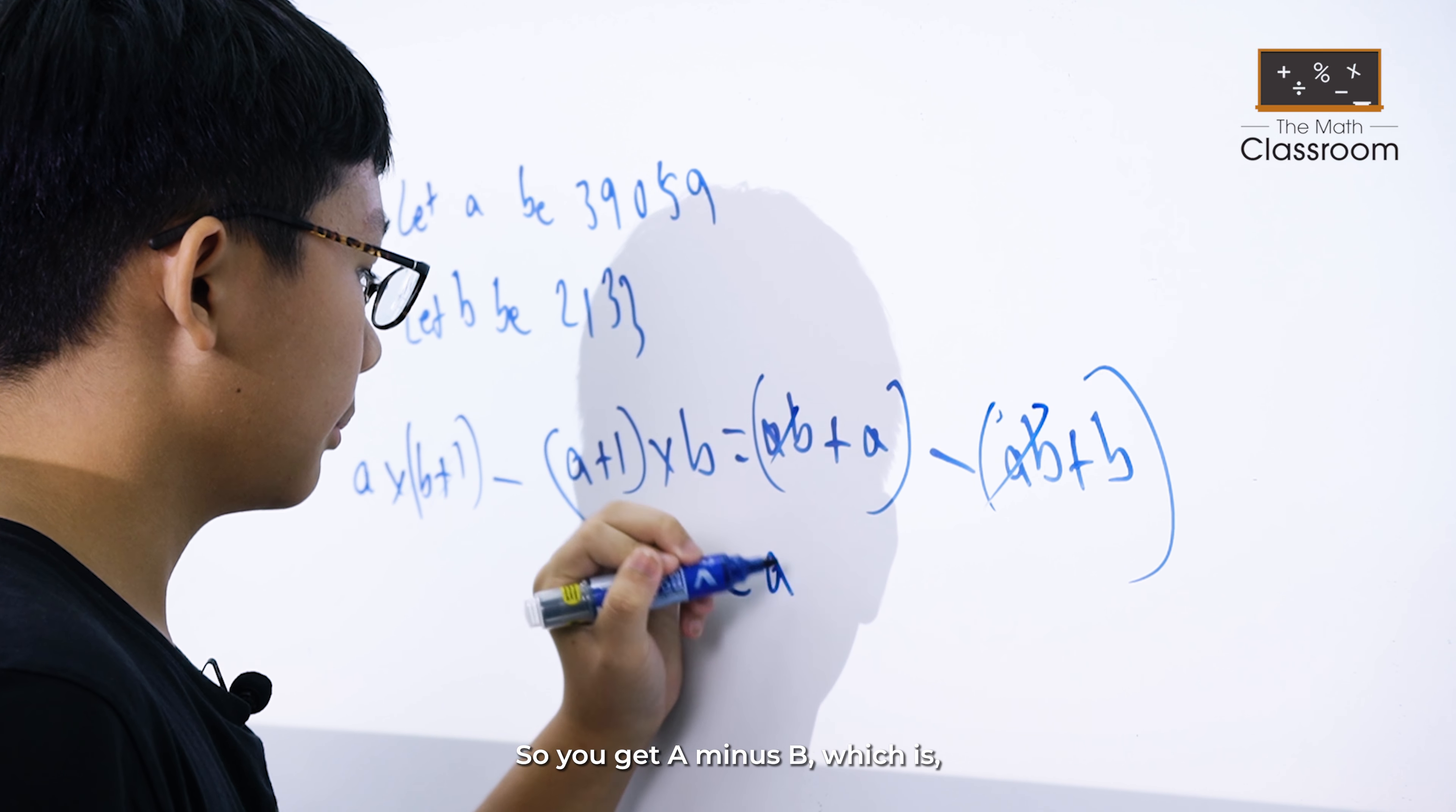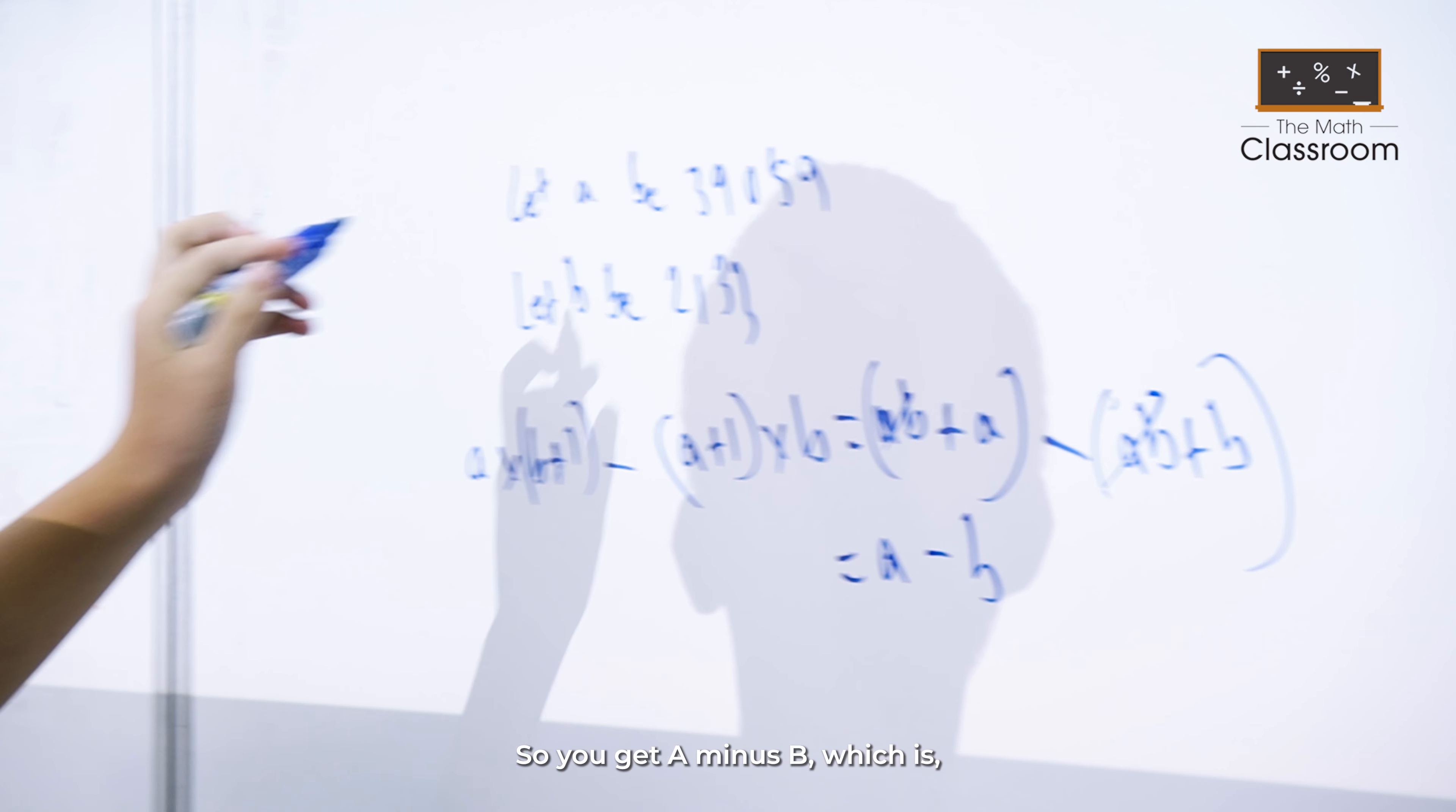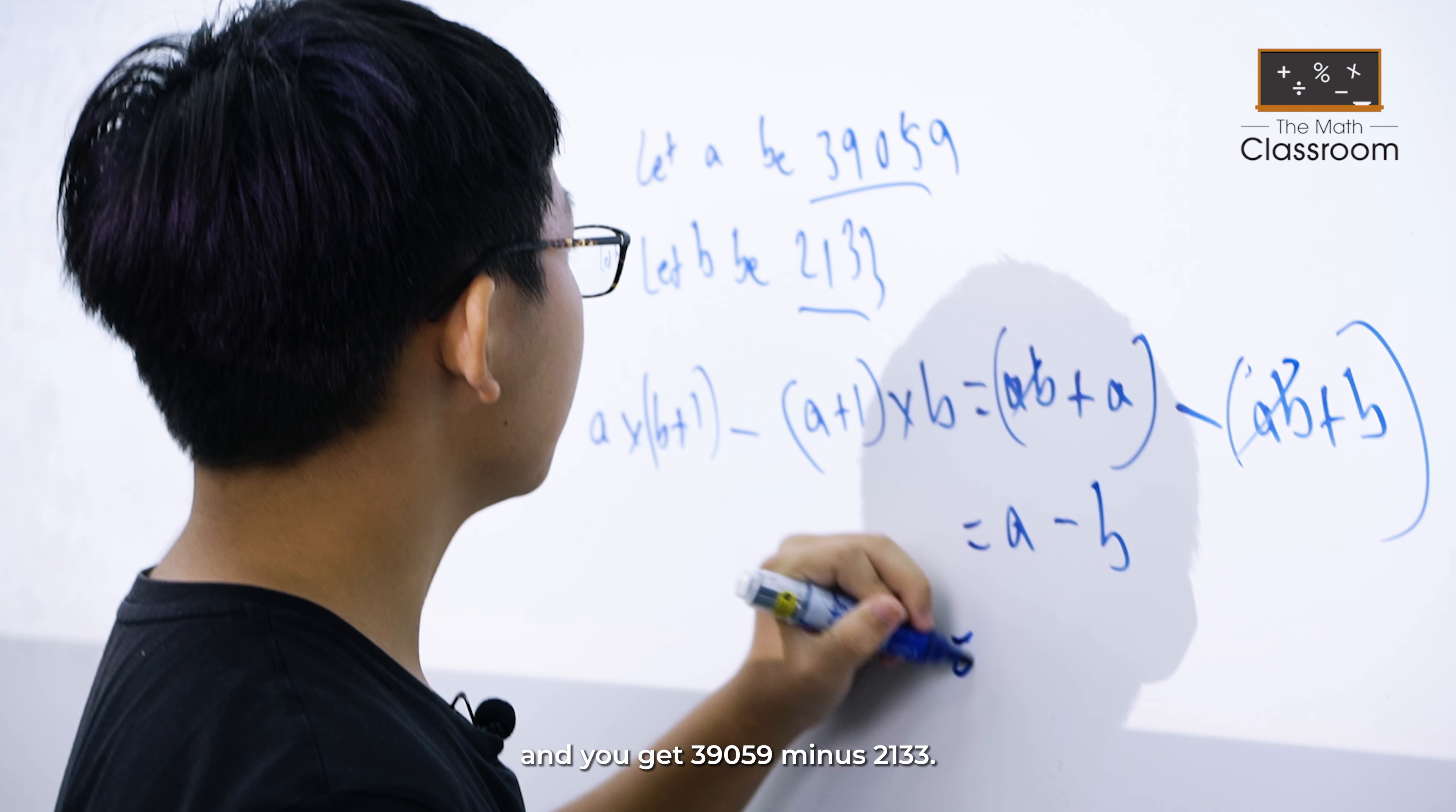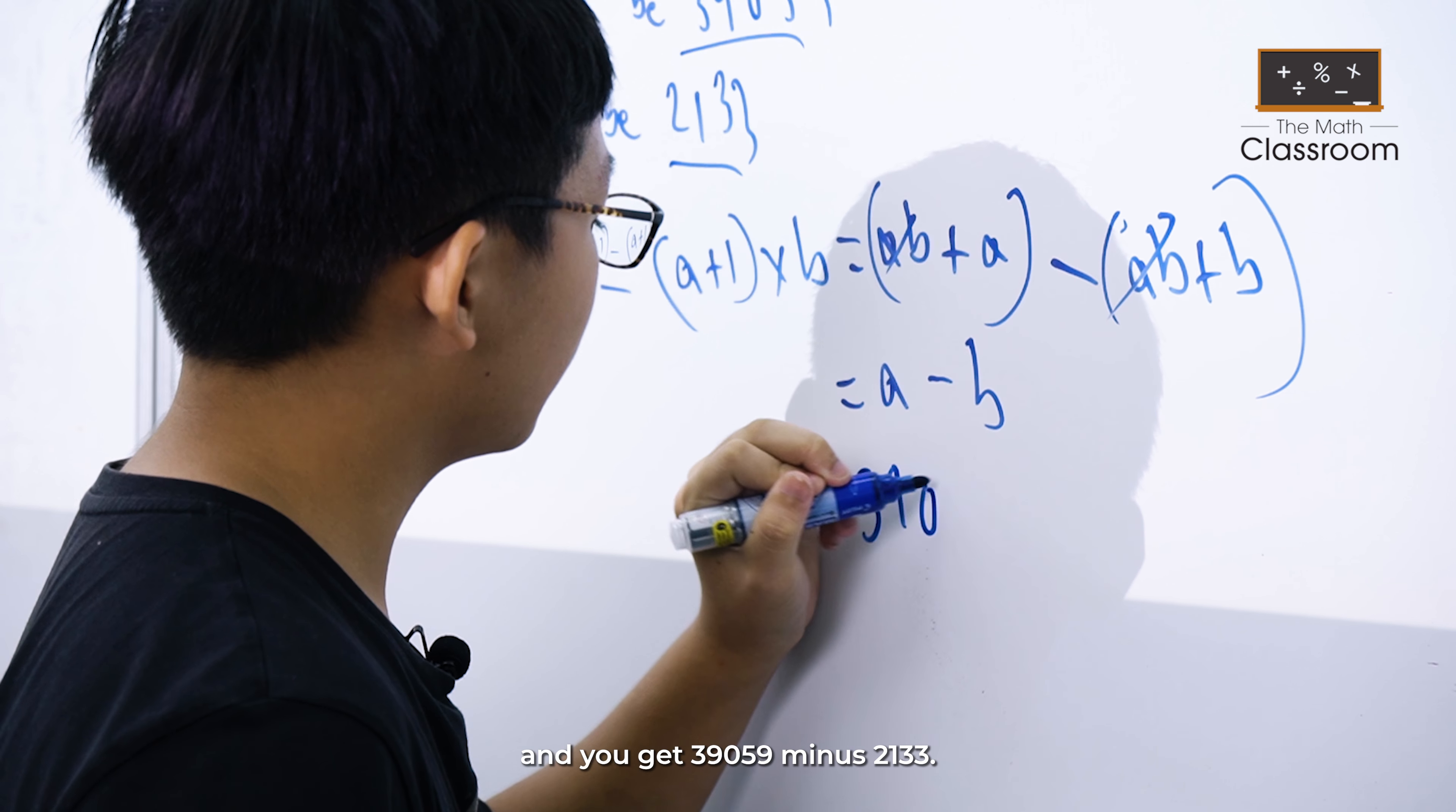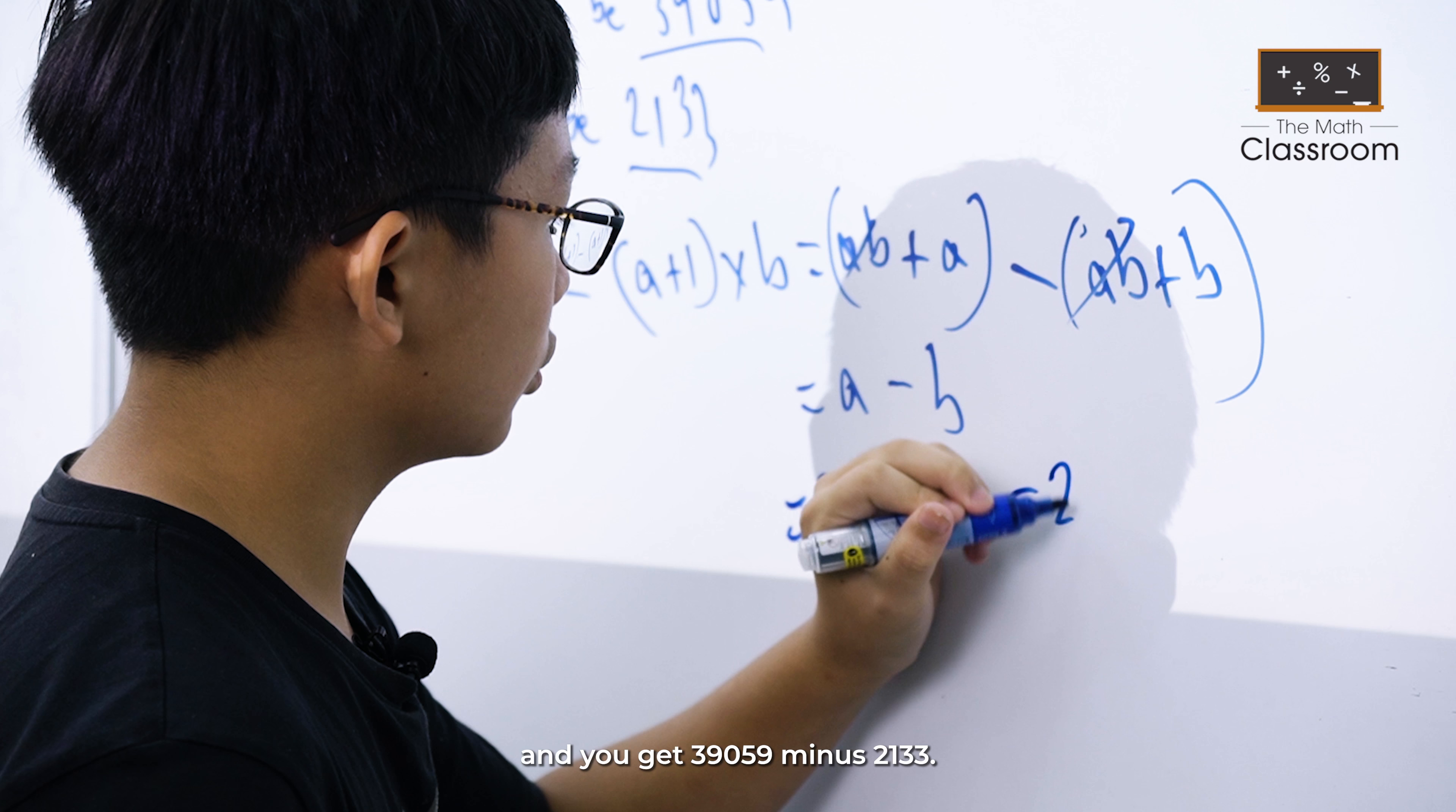So you get A minus B, which is, you can see this is A, this is B. And you get 39059 minus 2133.